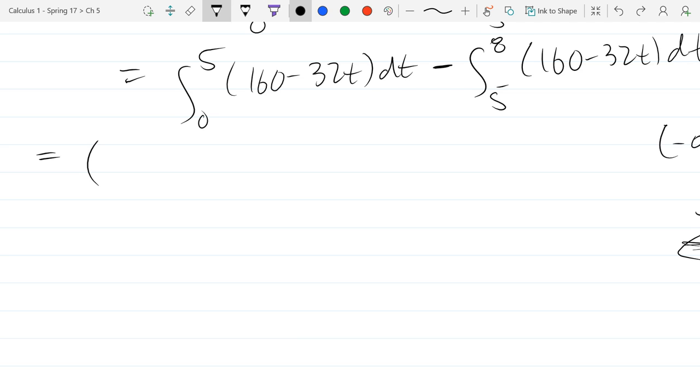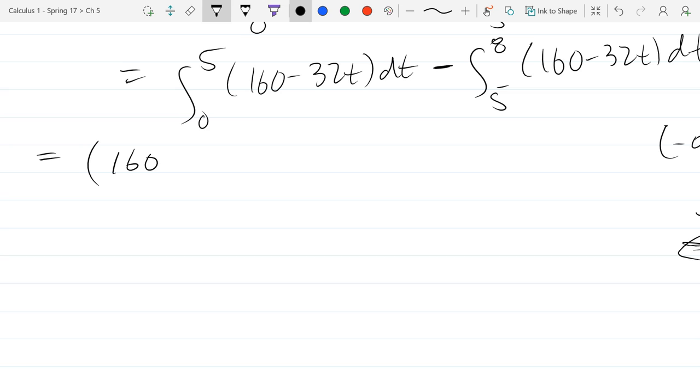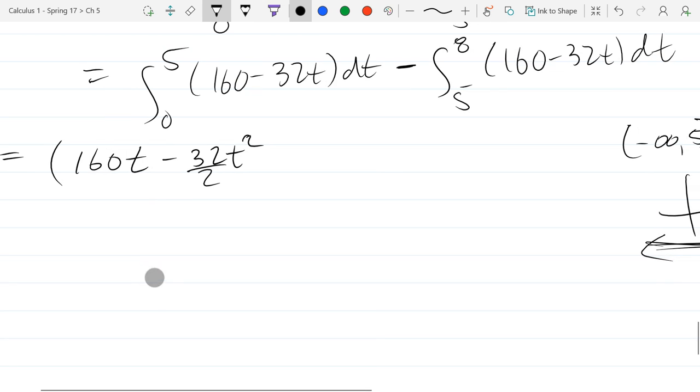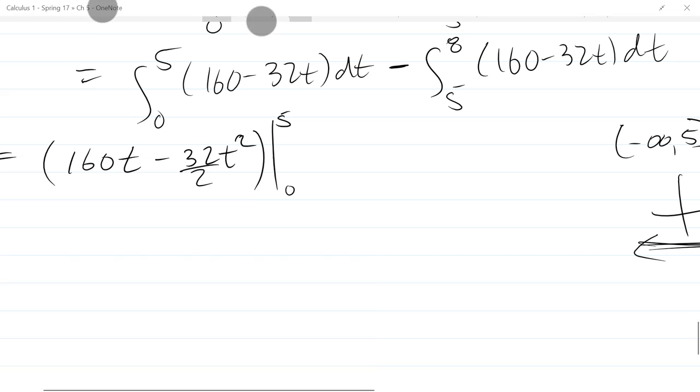So antiderivative 160, I'm going to take a guess and say 160t. And if I check, derivative is 160. For minus 32t, we can try minus 32t squared. But when I take a derivative, I get negative 64t. So that's not going to work. I can either divide by 2 or just write 16 right there. Now once you get your antiderivative, you're going from 0 to 5, so we do that vertical bar notation which keeps track of our endpoints.